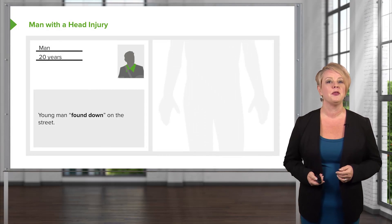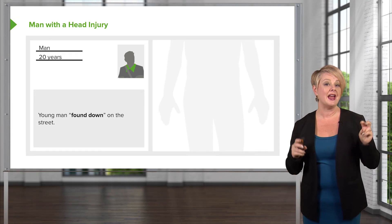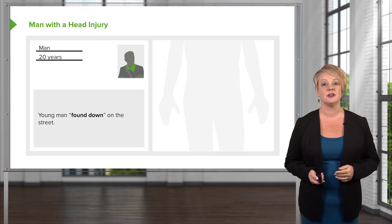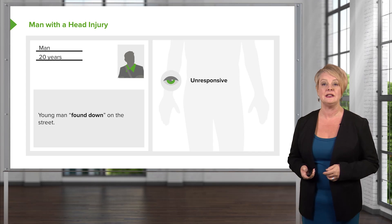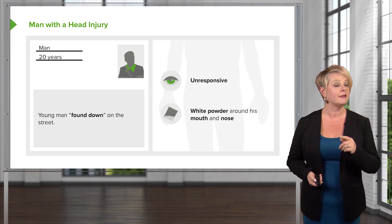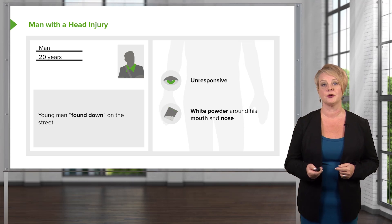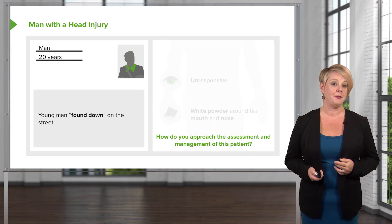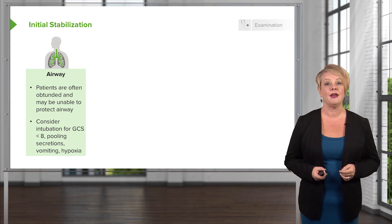Let's start off with a case. We have a 20-year-old man who is found down in the street — found unconscious, unresponsive on presentation to the ED, with white powder around his mouth and nose. That certainly should make you think about a toxicologic exposure. How are we going to approach the assessment and management of this patient? First and foremost, we're going to start with the ABCs.